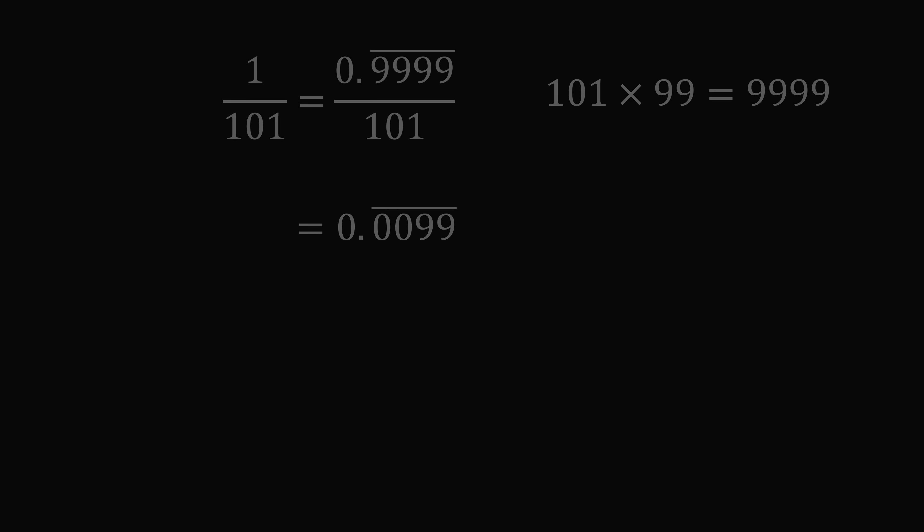Next question. What is 1 divided by 271? We again use a strategy. 271 times 369 is equal to 99,999. So we will have a numerator with 5 decimal places that are repeating. We need to include 2 leading zeros here. So this is equal to 0.00369 repeating. These 5 digits repeat forever.